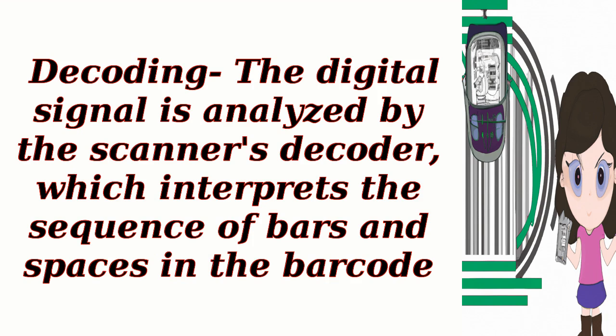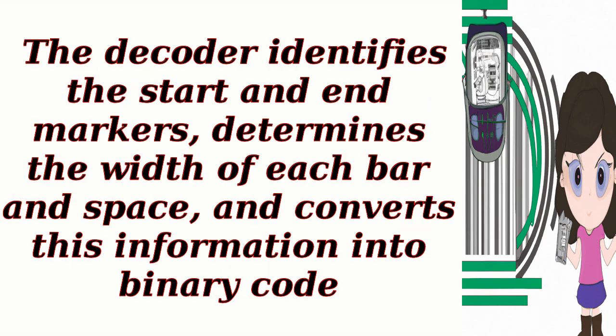Decoding: The digital signal is analyzed by the scanner's decoder, which interprets the sequence of bars and spaces in the barcode. The decoder identifies the start and end markers, determines the width of each bar and space, and converts this information into binary code.